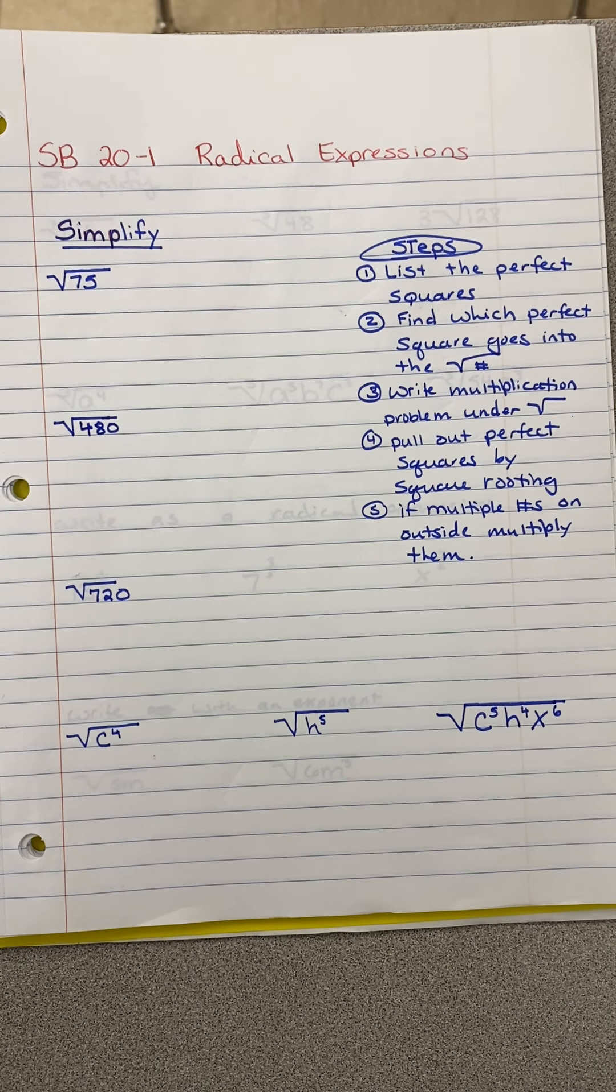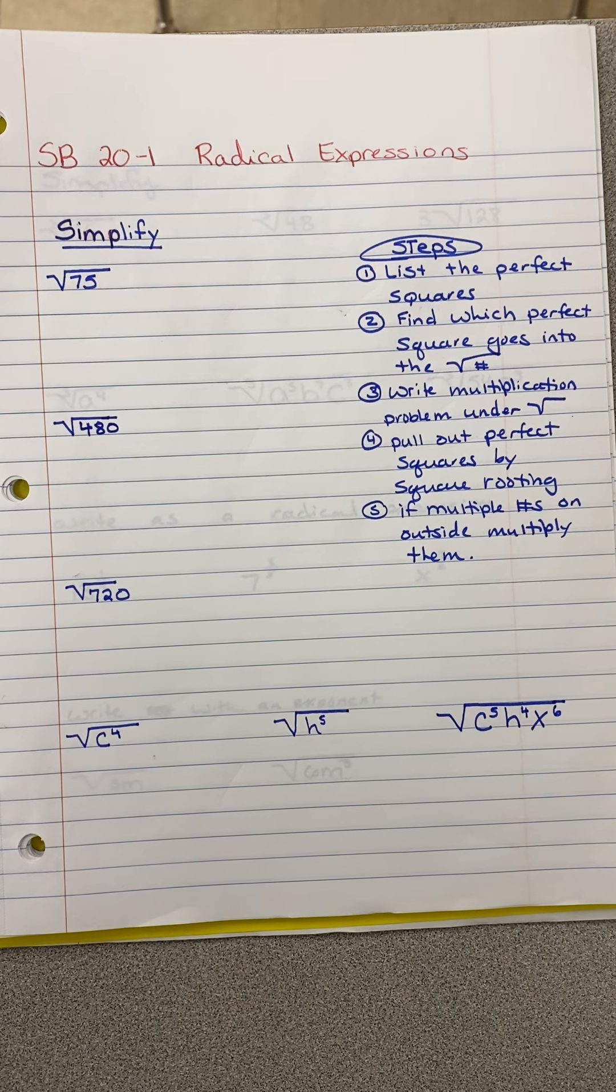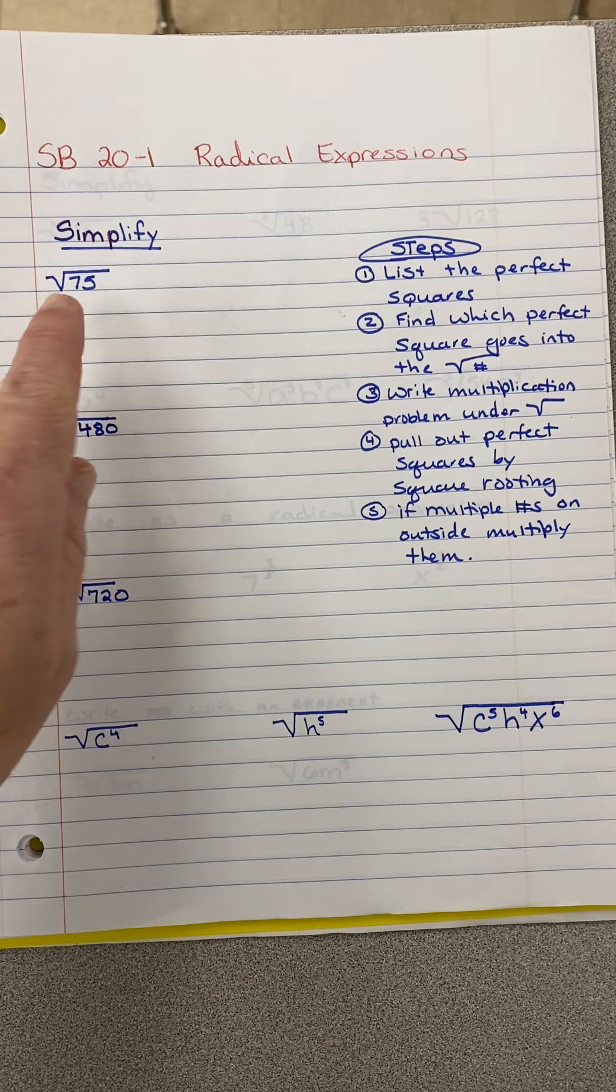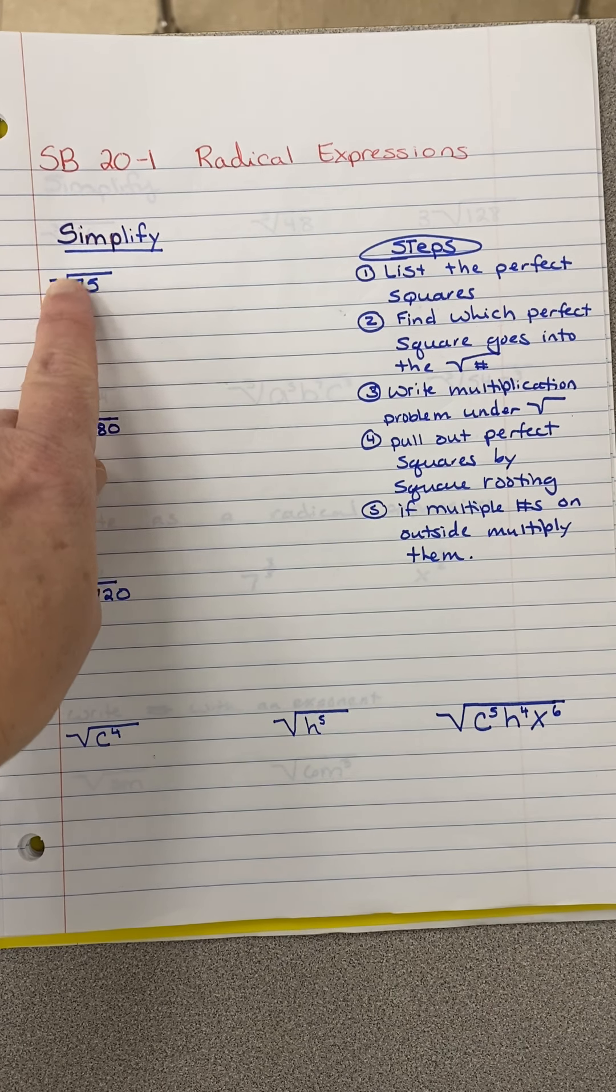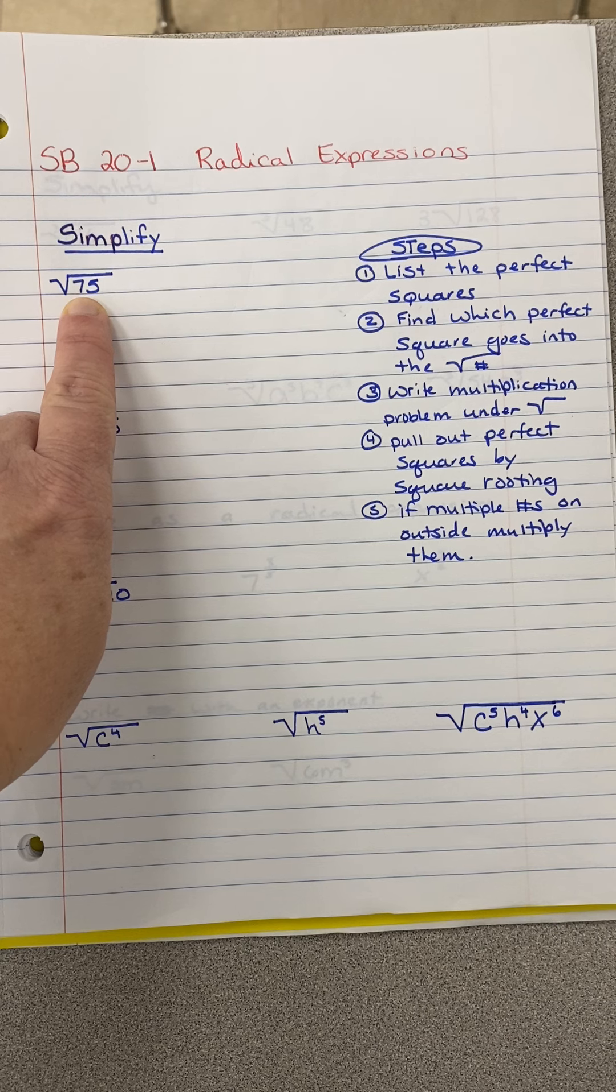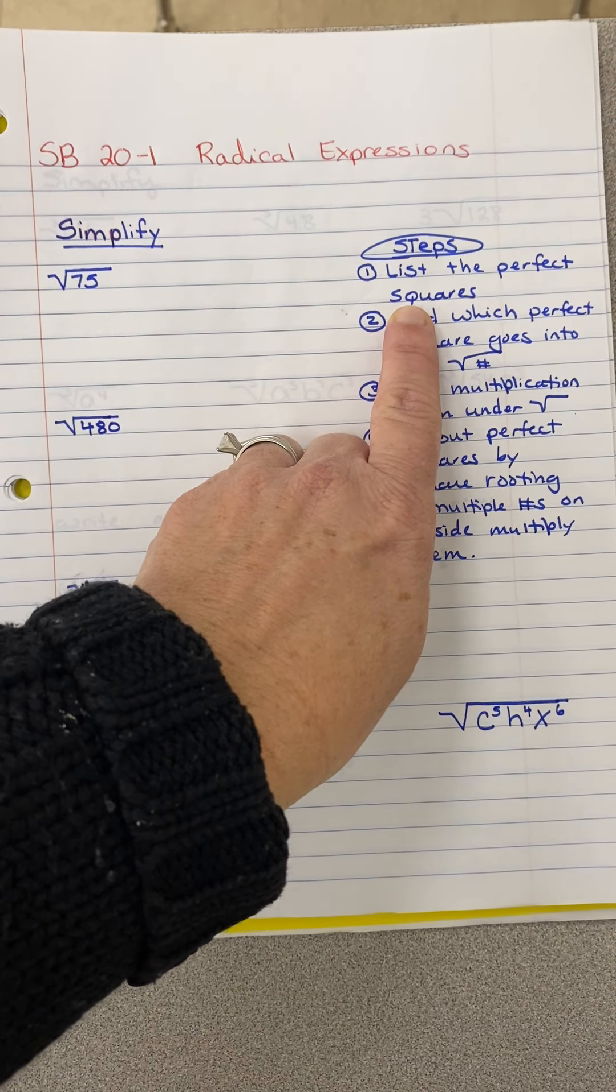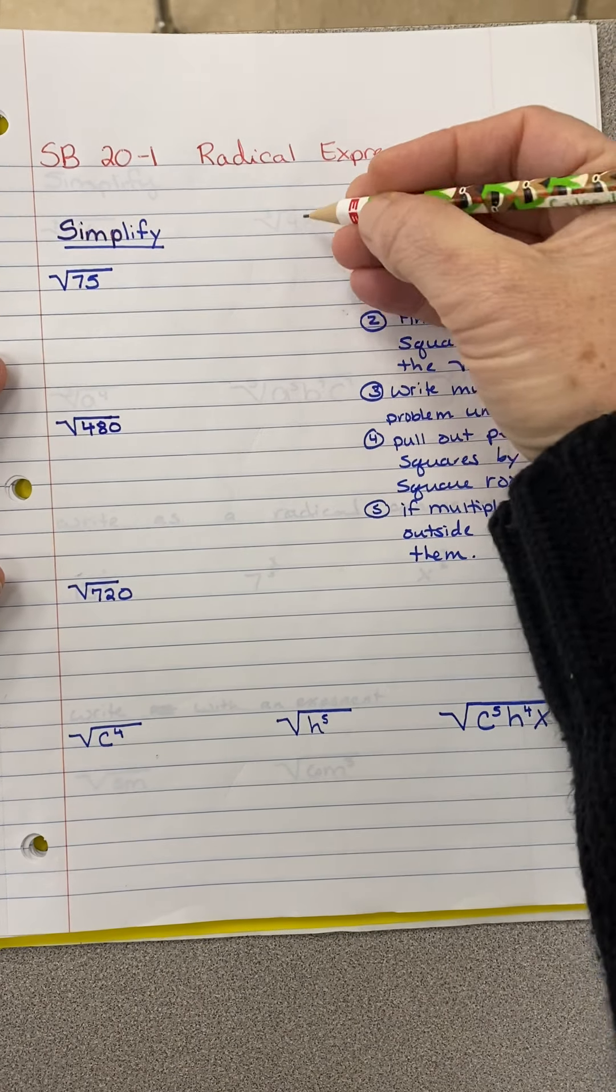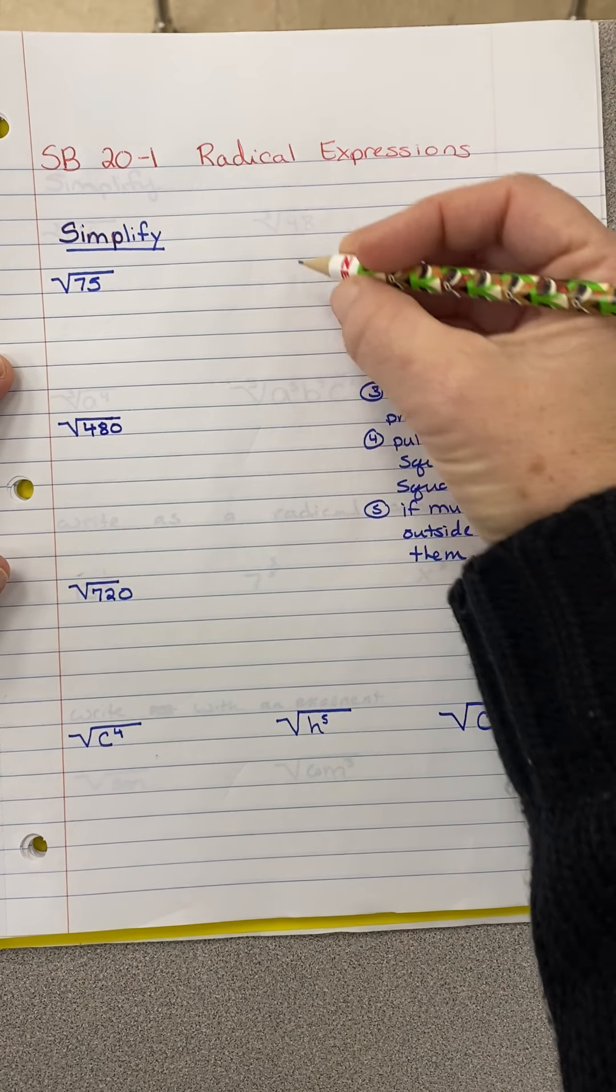Hi everyone, we're going to be simplifying radicals and I'm going to show you one method. There are a few different ones that you can use. So what I like to do first is I'm going to look at this symbol here, which is called a radical sign, and when you're first learning to do this,